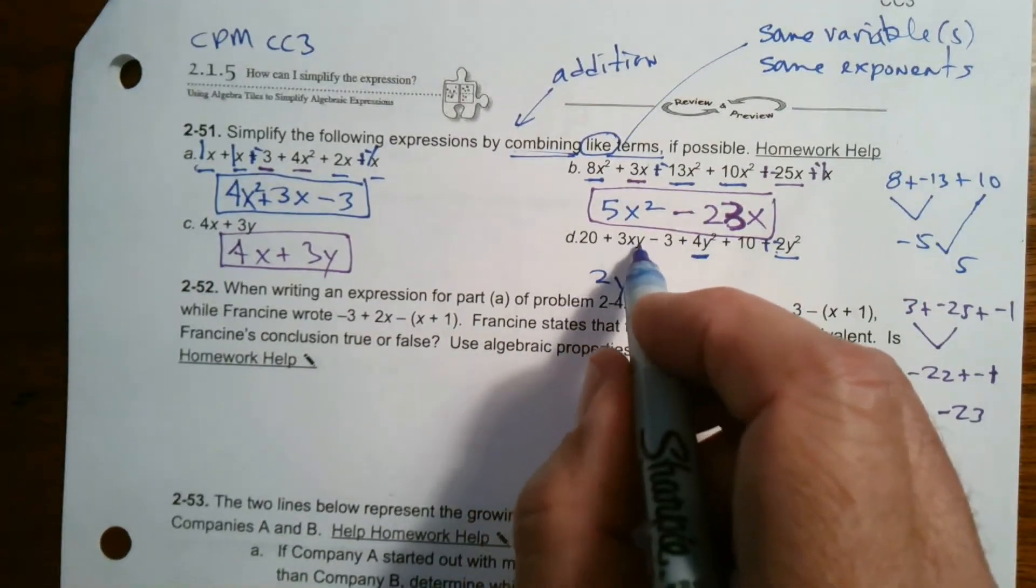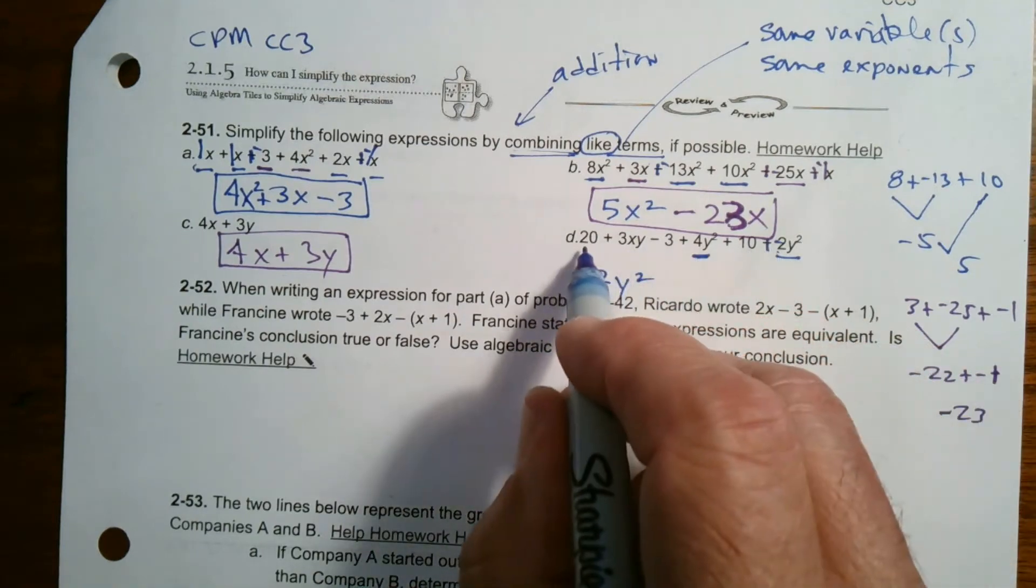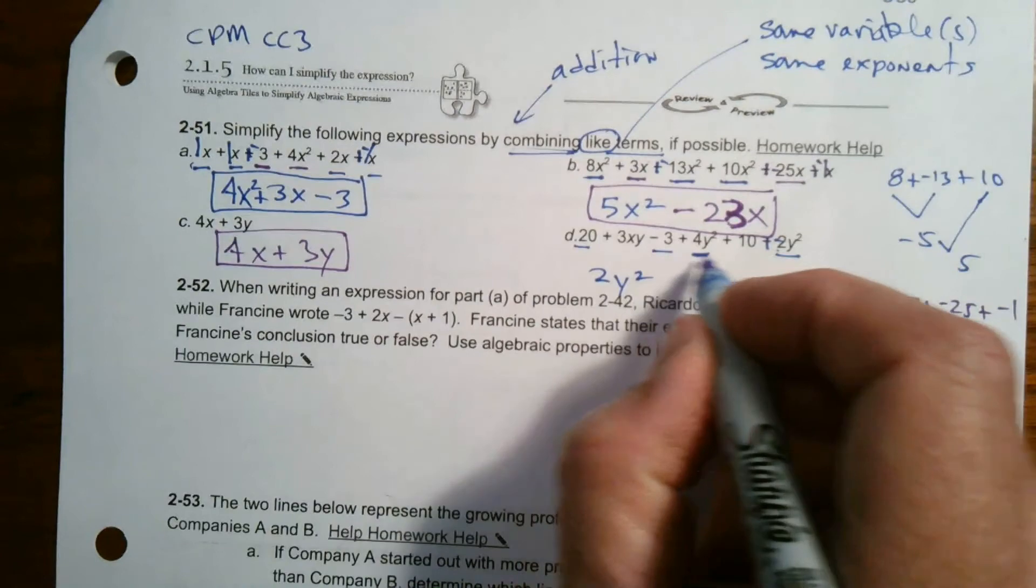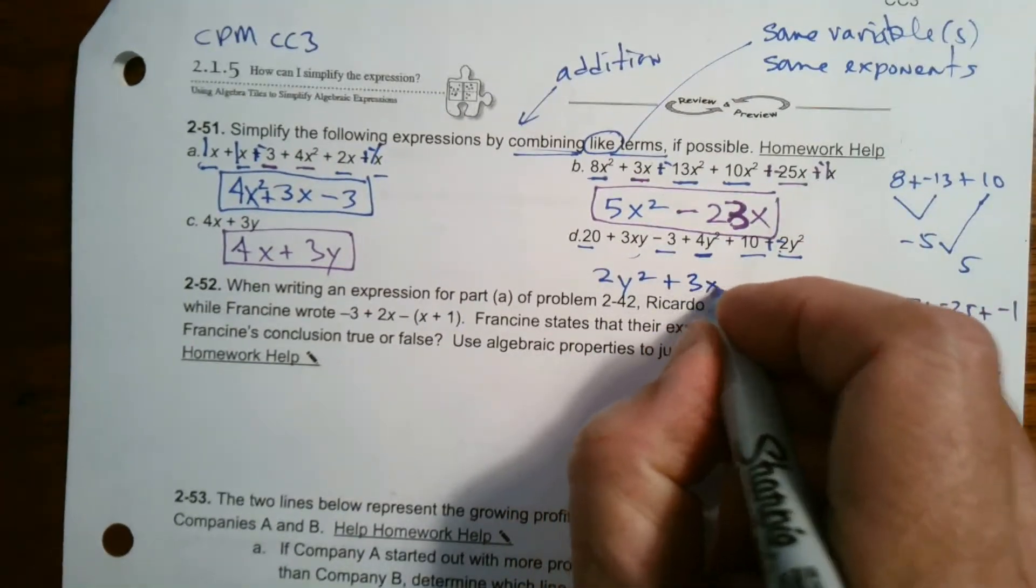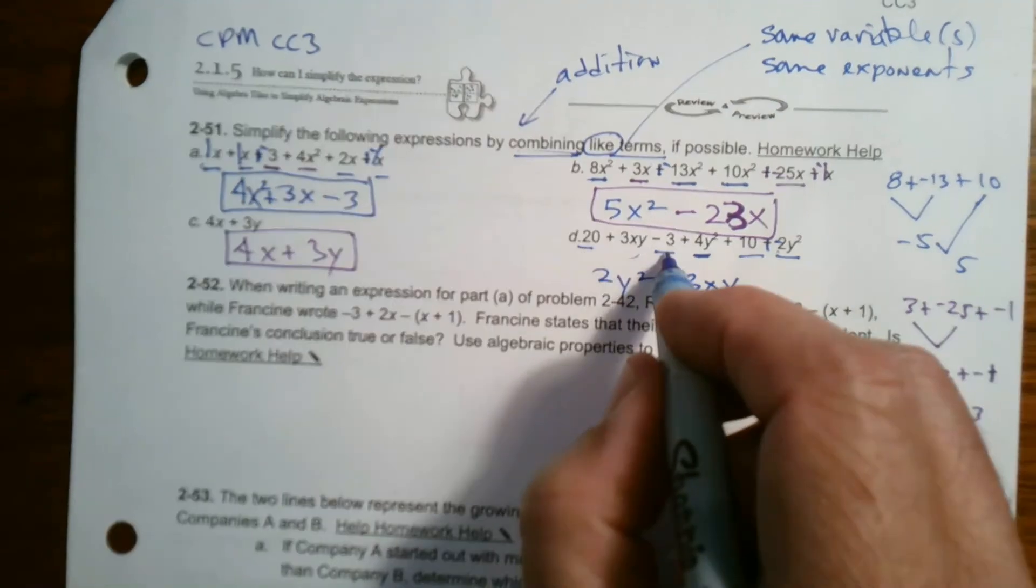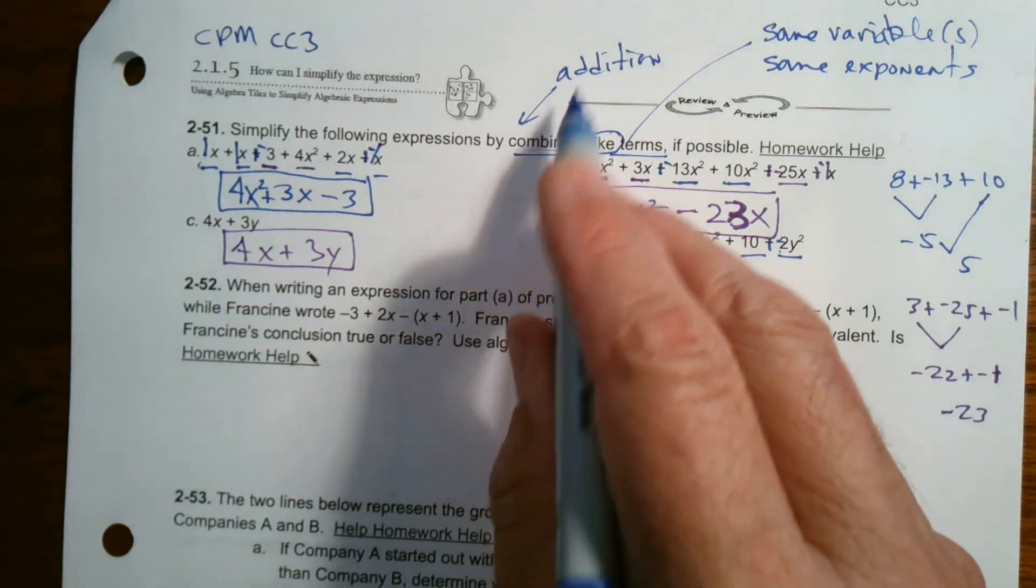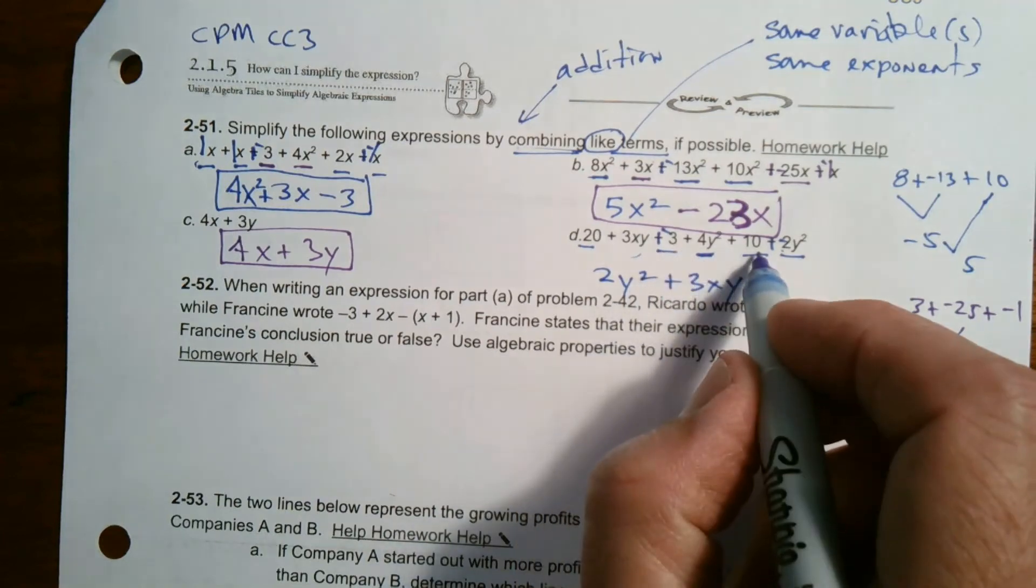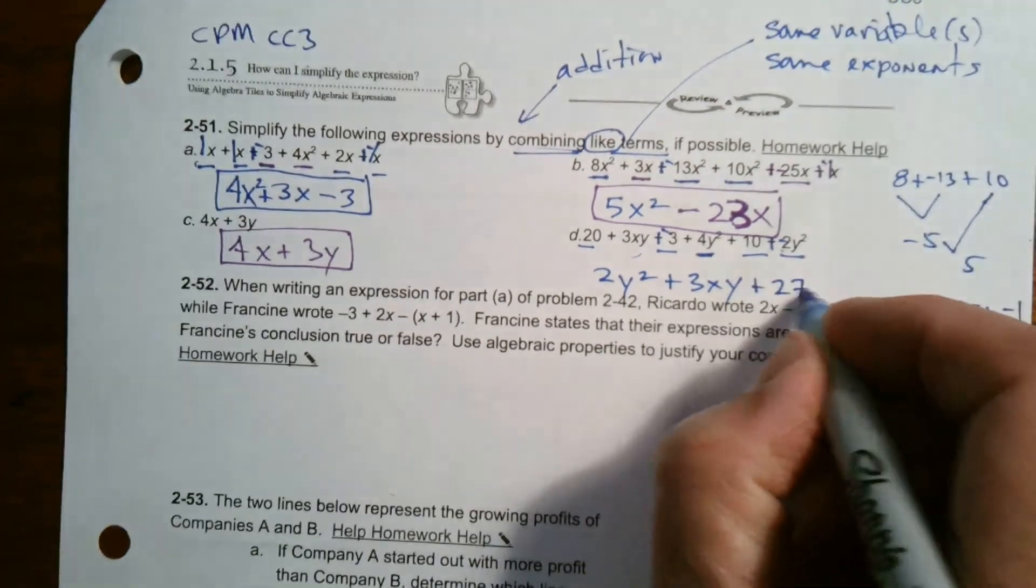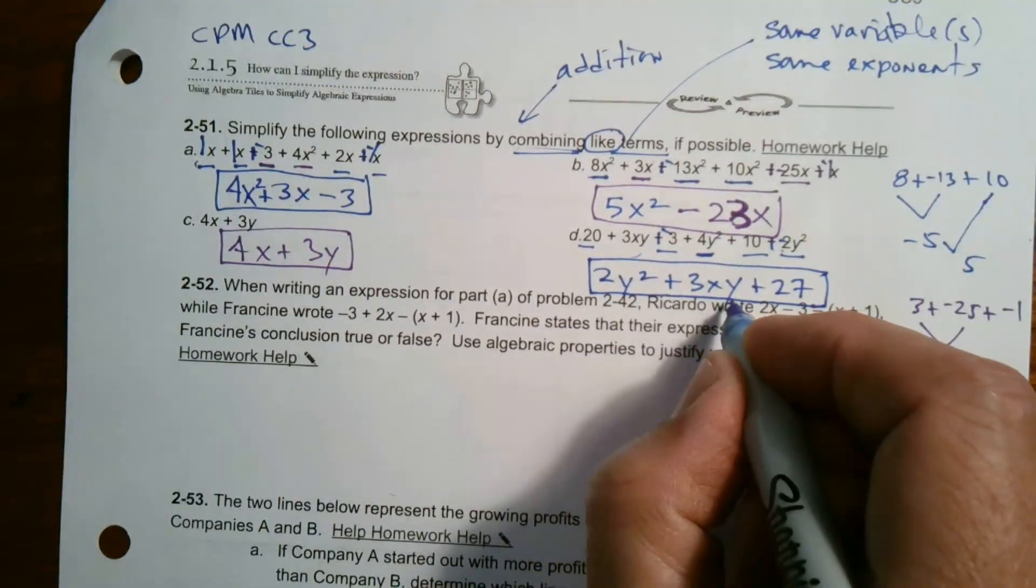Let's see what else I got. I got an X Y term and there's no other X Y terms. The rest are constants. So there's a 20, a negative three and a 10, but that's all by itself. So I'm just going to leave that as is three X Y. And now I add the constants 20 and a negative three. Remember add the opposite because you're combining, it's addition. So 20 and negative three is 17, and then 17 and 10 is 27. So my ending there is two Y squared plus three X Y plus 27. All right. I hope that helps.